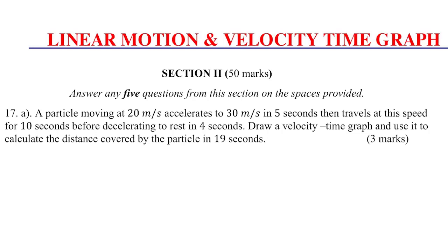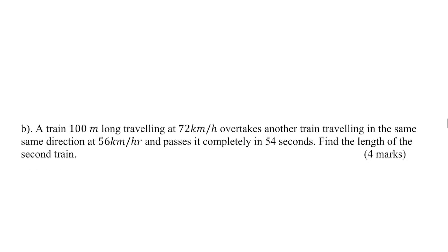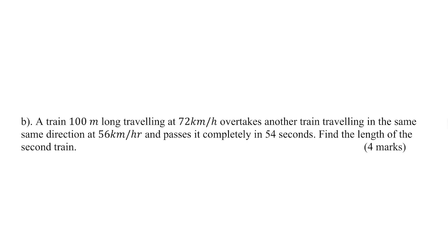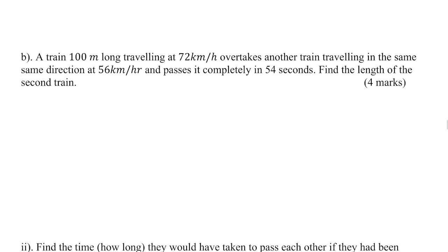The question is here. A particle moving at 20 meters per second accelerates to 30 meters per second in 5 seconds, then travels at that speed for 10 seconds before decelerating to rest in 4 seconds. Draw a velocity-time graph and use it to calculate the distance covered by the particle in 19 seconds. That is 3 marks. Part B: a train 100 meters long traveling at 72 kilometers per hour overtakes another train traveling in the same direction at 56 kilometers per hour and passes it completely in 54 seconds. Find the length of the second train, 4 marks.